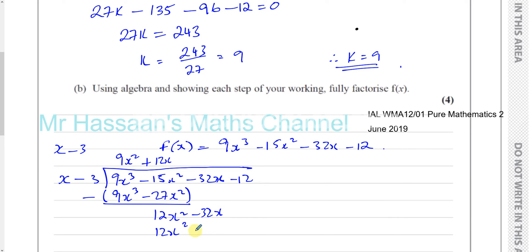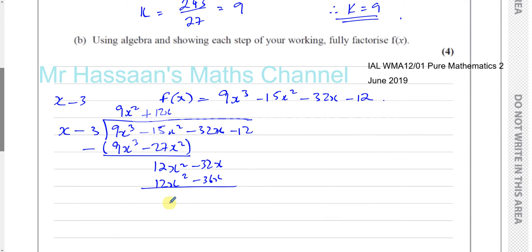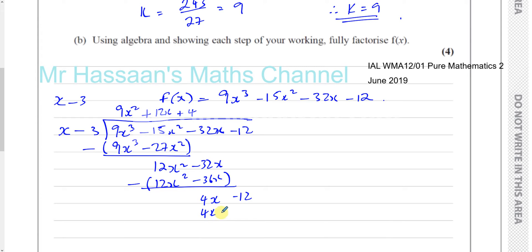12x times minus 3 is minus 36x. Subtract: this gives 0, and minus 32 plus 36, which is 4, giving 4x. 4x divided by x goes 4 times, so plus 4. Bring down the minus 12: 4 times x is 4x, and 4 times minus 3 is minus 12. No remainder — remainder is 0.